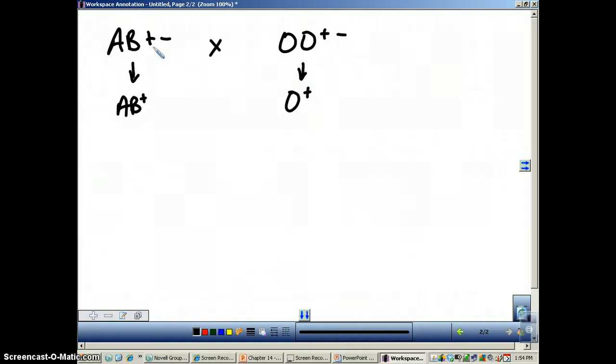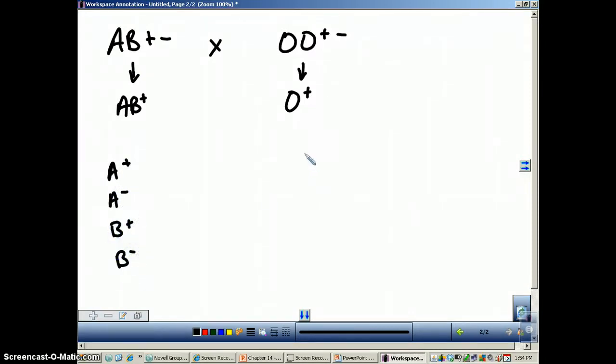Basically, you're looking at these positives and negatives as another set of letters. So let's do the Punnett square. This individual could make gametes that are A positive and A negative. They can also make B positive and B negative. And this individual can make two types of gametes: O positive and O negative.